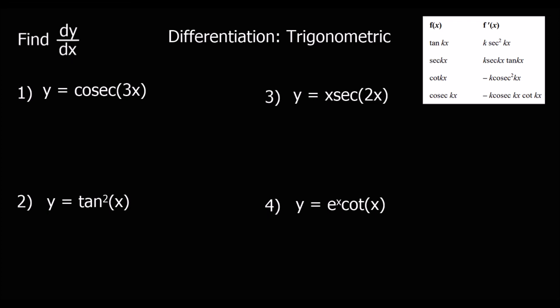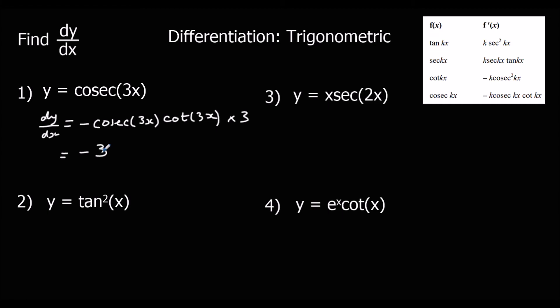Here's another set of questions — pause the video, give them a go, and then I'll go through the answers. Question one: y equals cosec 3x. Cosec differentiates to minus cosec cot, so dy/dx is minus cosec 3x cot 3x, times the bracket differentiated, which is 3. Simplified: minus 3 cosec 3x cot 3x.